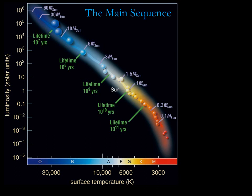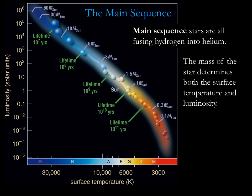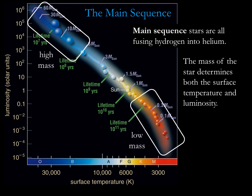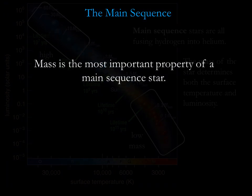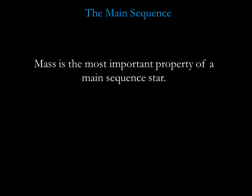All the stars on the main sequence have something in common. They are all fusing hydrogen into helium in their cores. The mass of the star determines both the surface temperature and luminosity. The hottest and most luminous main sequence stars have a high mass. The coolest and dimmest main sequence stars have a low mass. This orderly arrangement tells us that mass is the most important property of a main sequence star.